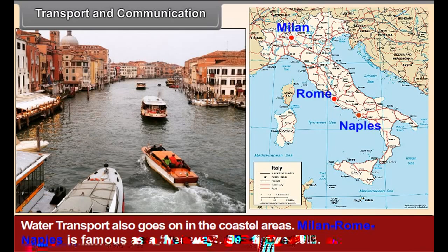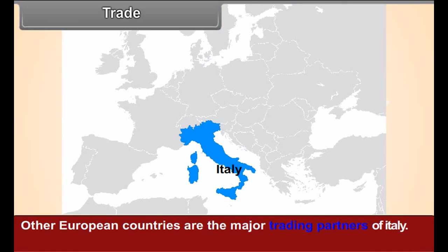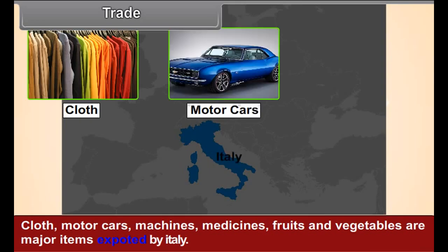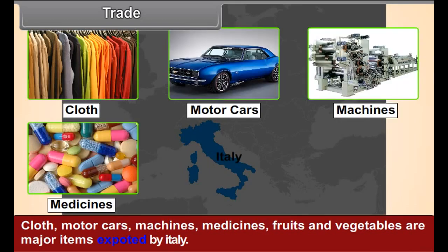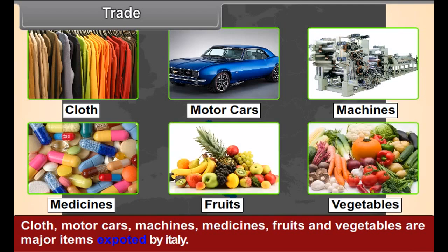Milan, Rome, and Naples are famous as freeway cities. Trade: other European countries are the major trading partners of Italy. Cloth, motor cars, machines, medicines, fruits, and vegetables are major items exported by Italy.